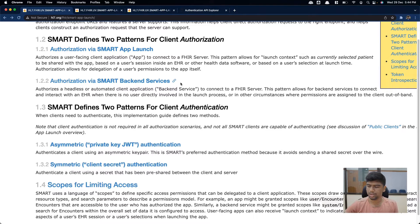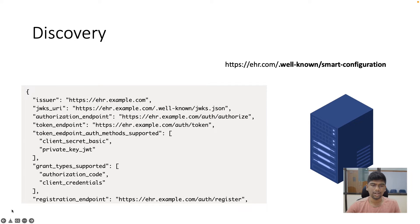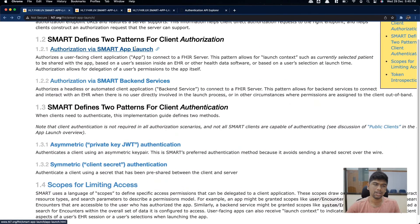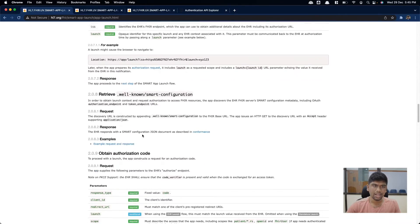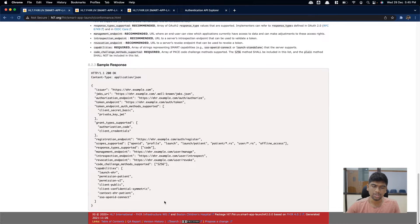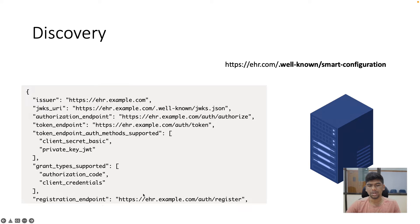Let's look at how a back-end service can actually gain access to a FHIR server. We have a FHIR server at ehr.com. The discovery API says that if you query a particular URL via a GET request you get the discovery endpoint response. Here's an example response from the FHIR website. Two things are very important for authenticating our back-end service: the token endpoint and the registration endpoint.